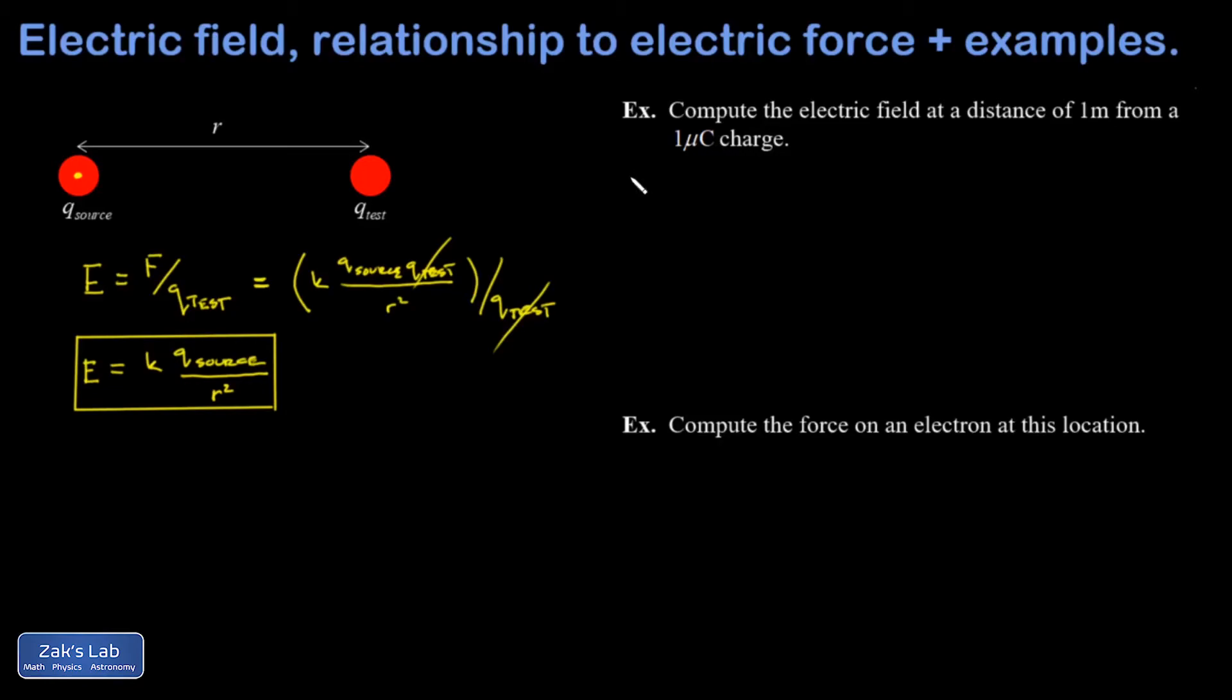That allows us, then, to answer a question like this first example. Compute the electric field at a distance of one meter from a one microcoulomb charge. All right, so we could go in any direction to do this, as long as we're one meter away from that source charge. And the electric field is going to be a vector assigned to each point in space. Again, pointing away from this positive source charge, because that's the direction the force would be on a positive test charge. Then we apply our formula real quick.